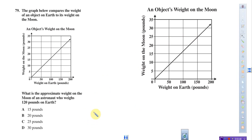What is the approximate weight on the Moon of an astronaut who weighs 120 pounds on Earth? If you weigh 120 pounds on Earth, how much do you weigh on the Moon? You want to underline important things: 120 pounds.